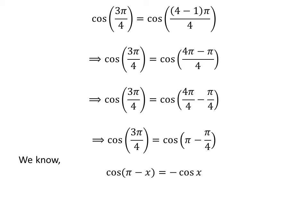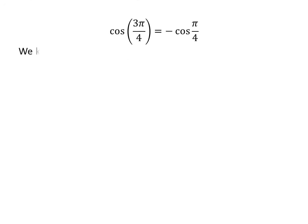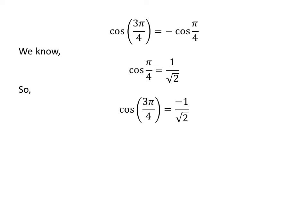We know the famous trigonometry identity: cosine of pi minus x is equal to minus cosine of x. The proof of this identity has been explained in the video appearing in the upper right corner of this video; the link is also given in the description section. Application of this identity gives us cosine of 3 times pi upon 4 is equal to minus cosine of pi upon 4. We know cosine of pi upon 4 is equal to 1 upon square root of 2. So cosine of 3 times pi upon 4 is equal to minus 1 upon square root of 2.